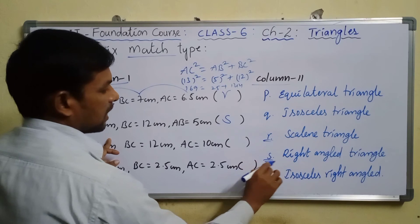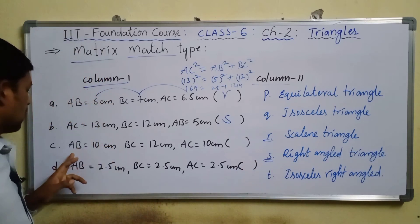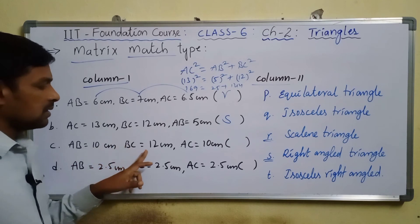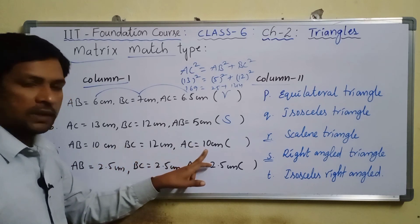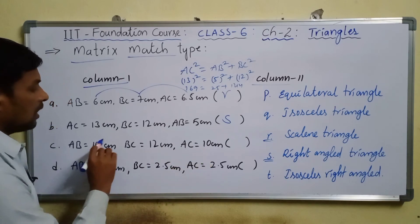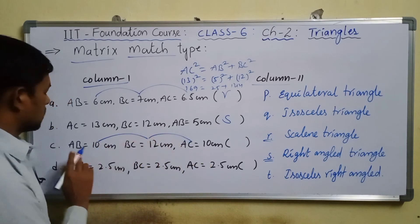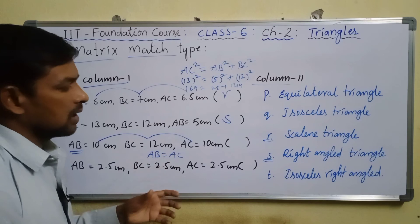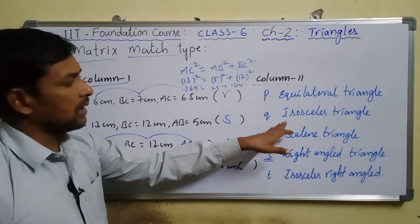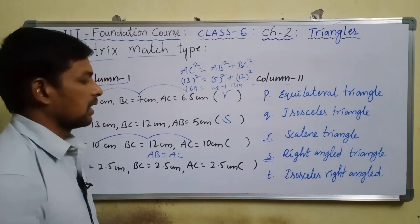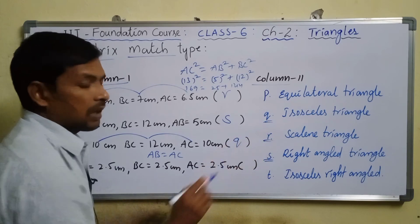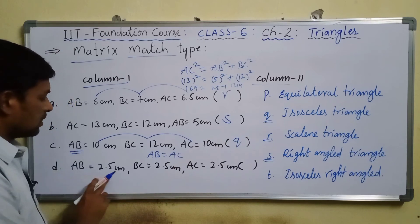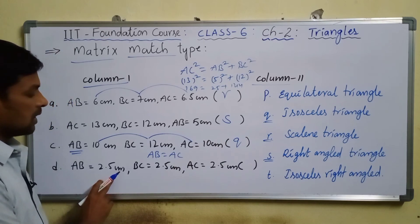Item C: AB = 10 cm, BC = 12 cm, AC = 10 cm. Here AB = AC, so two sides are equal. This is an isosceles triangle, matching option Q.